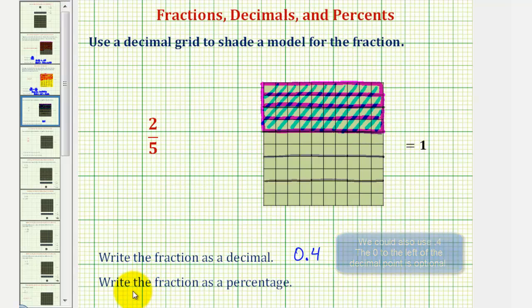And now for the last part, we want to write the fraction as a percentage, where a percentage is a number per one-hundred. So looking back at our model, let's focus on the ten by ten grid, which cuts one into one-hundred equal pieces.